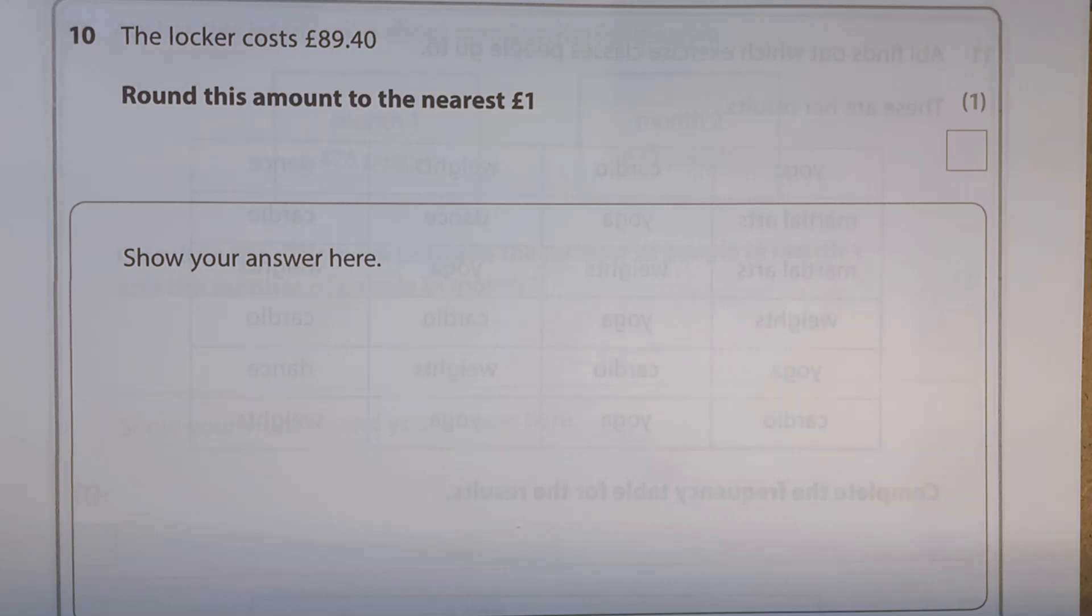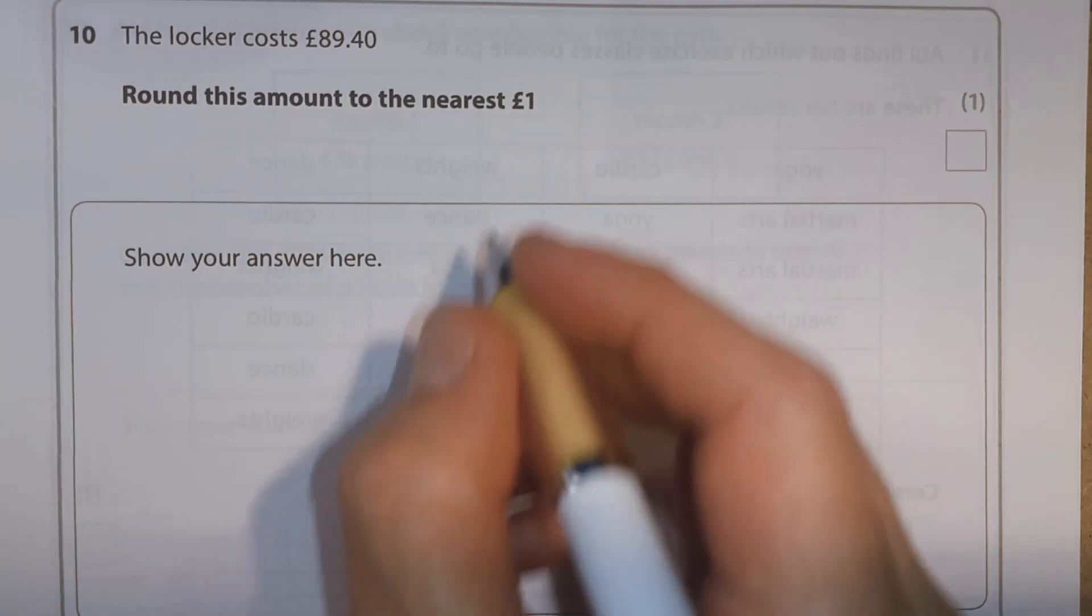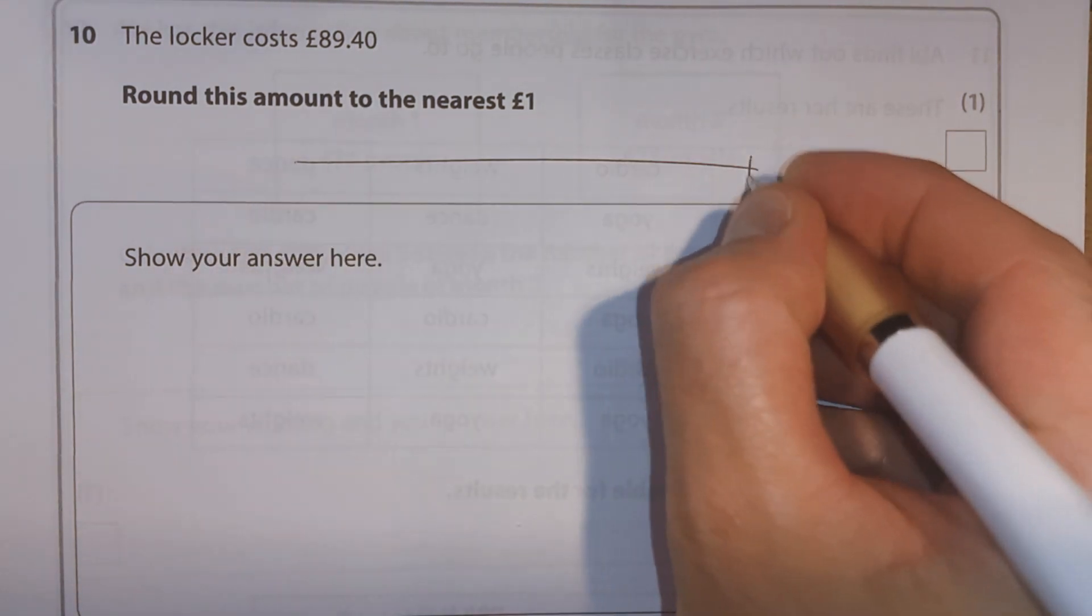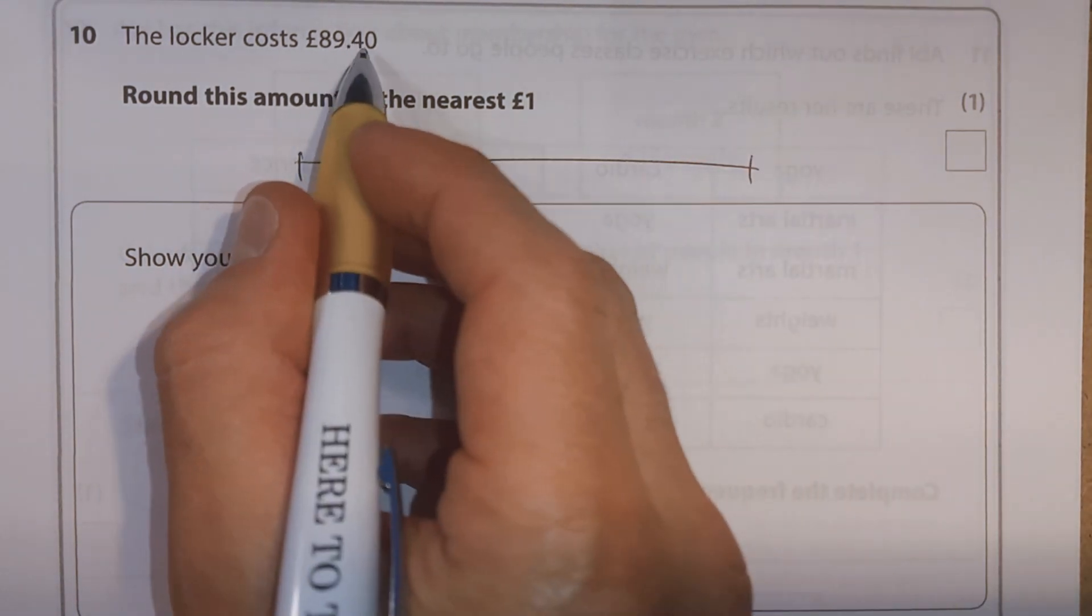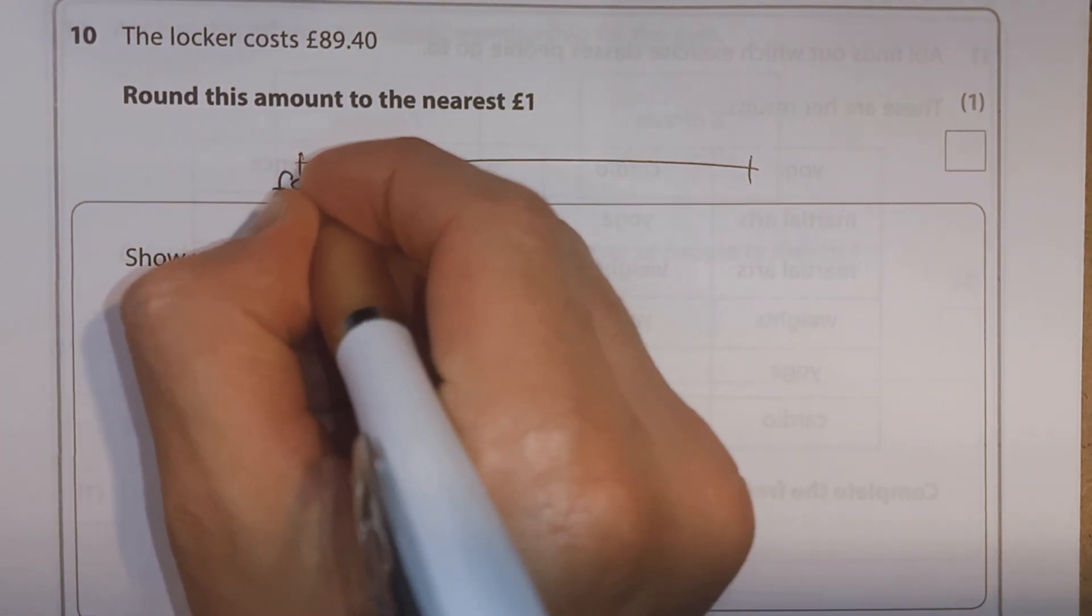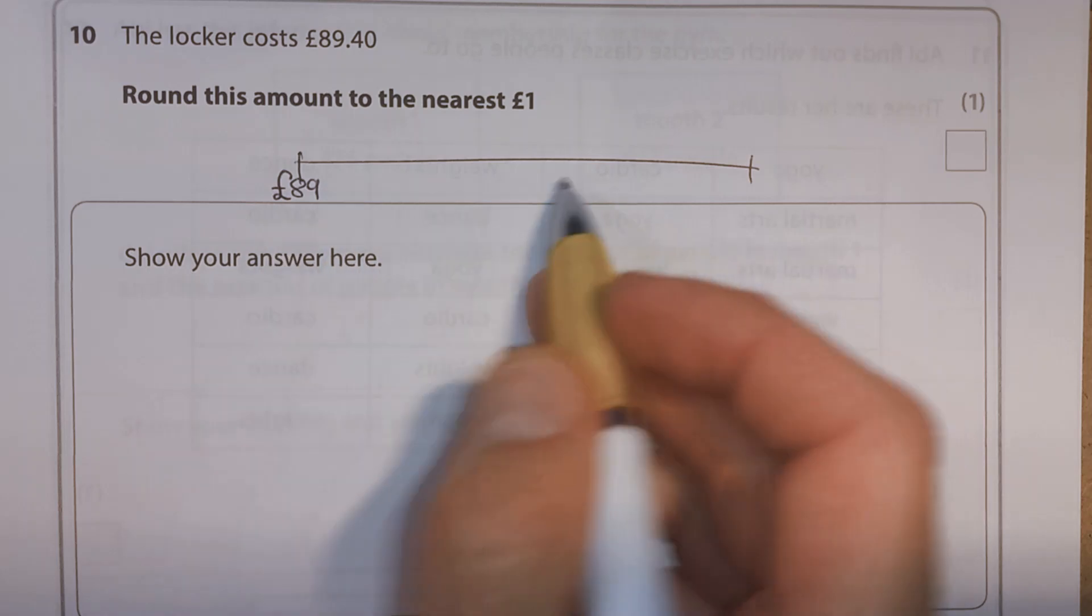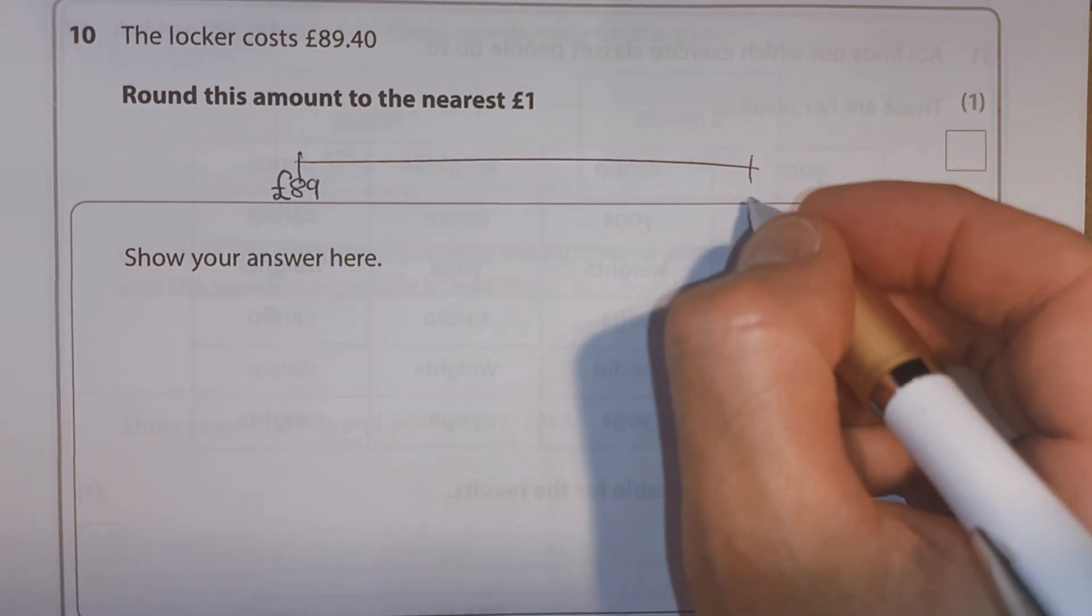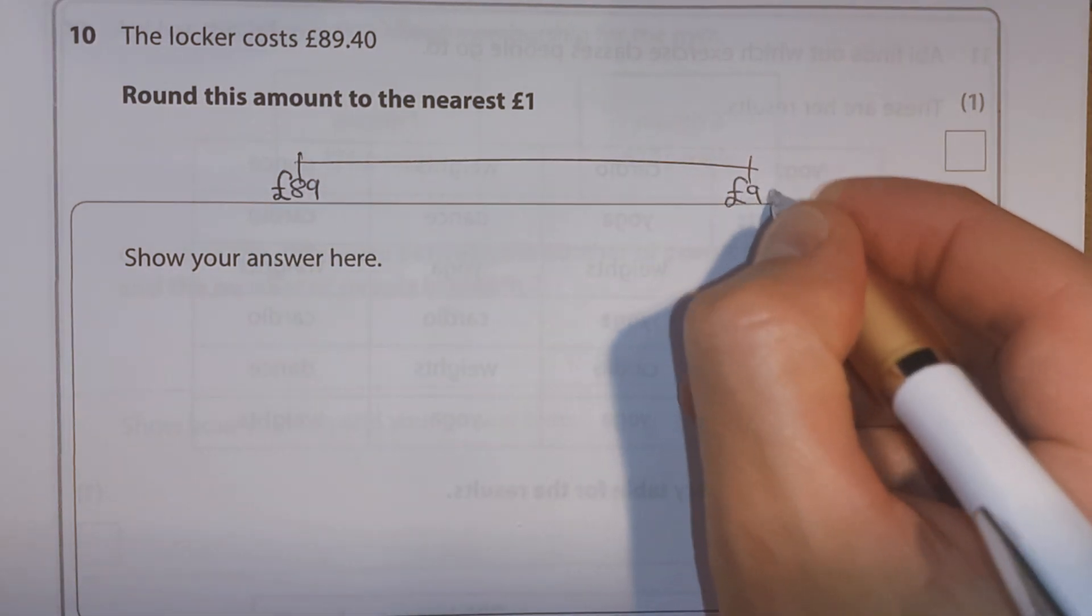Question 10. The locker costs £89.40. Round this amount to the nearest pound. Okay, let's do a number line. Well, what pounds is it between? Well, if we just took the pence off, it would just be £89. But it's got something on, so it must be more than that. Well, the next pound up from it would be £90.